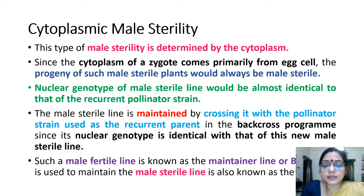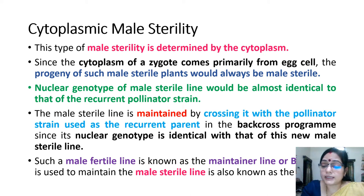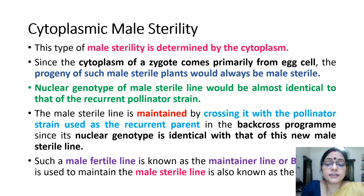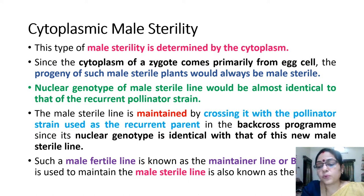Since the nuclear genotype of this type is identical with that of the new male sterile line, such a male fertile line is known as a maintainer line or B-line. It is used to maintain the sterile line, which is also known as the A-line.